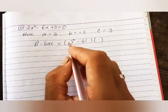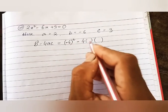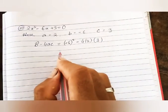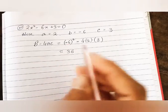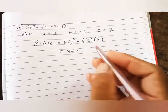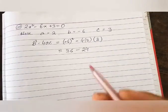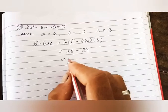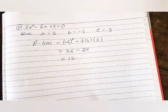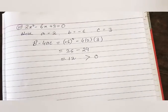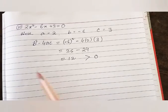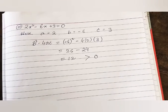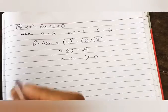b² - 4ac: b = -6, so (-6)² = 36, and 4 × 2 × 3 = 24. So b² - 4ac = 36 - 24 = 12, and 12 is greater than 0. As already learned, if b² - 4ac is greater than 0, the equation has two distinct real roots.